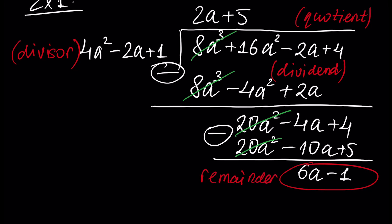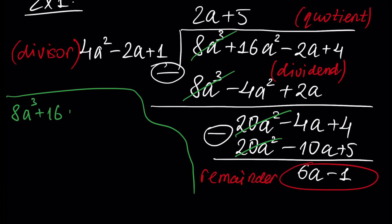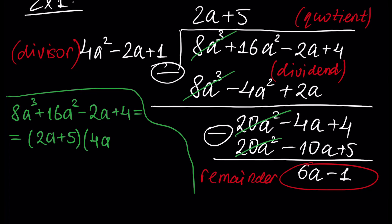Therefore, our dividend 8a³ plus 16a² minus 2a plus 4 can be represented as the quotient (2a plus 5) times the divisor (4a² minus 2a plus 1) plus the remainder (6a minus 1).